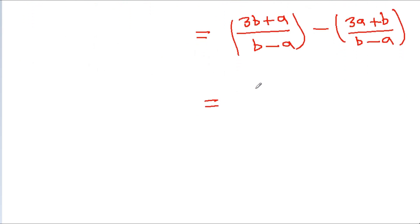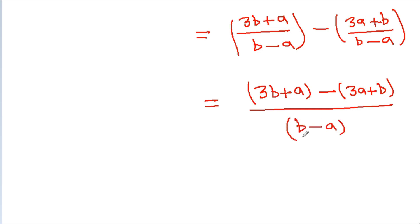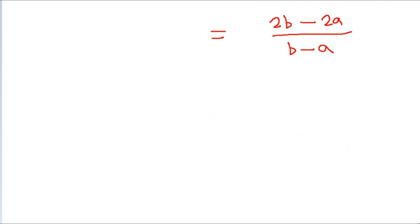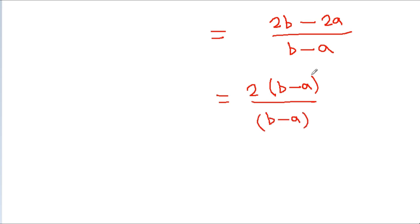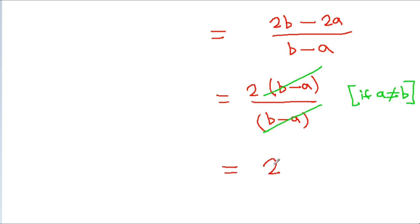We can get 3ab plus a minus 3ab plus b over b minus a, which gives 2ab plus a minus b over b minus a. Taking out 2ab plus b, we can cancel b minus a, so the required answer is 2.